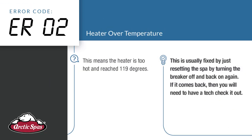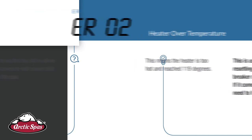ER02 — heater over temperature. This means that the heater is too hot and has reached 119 degrees. This is usually fixed by just resetting the spa by turning the breaker off and back on again. If it comes back, you'll need to have a tech come out to check it out.